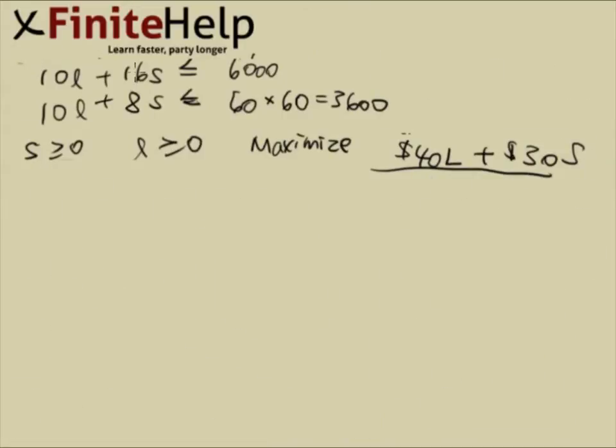Here are the constraints and the objective function we found from the problem. And since I know that s and l cannot be negative, I'll go ahead and just make it the positive quadrant.